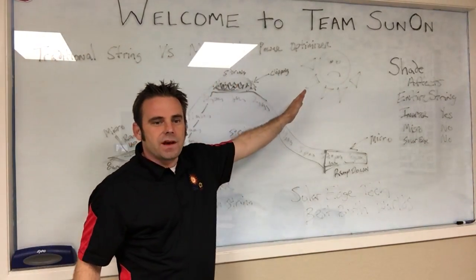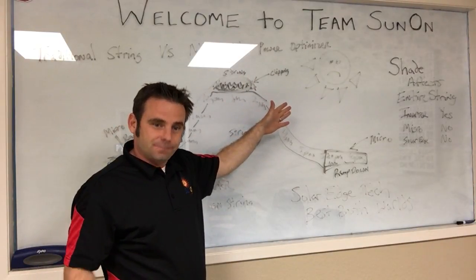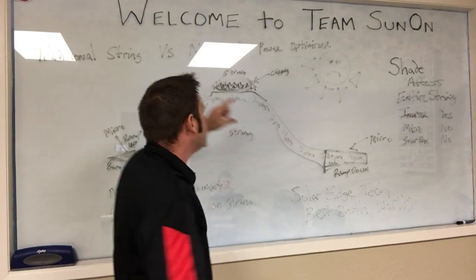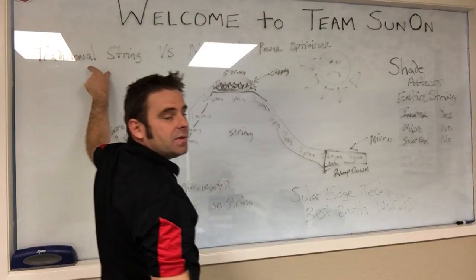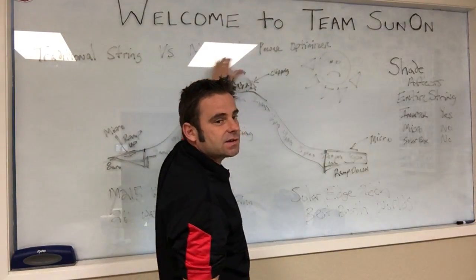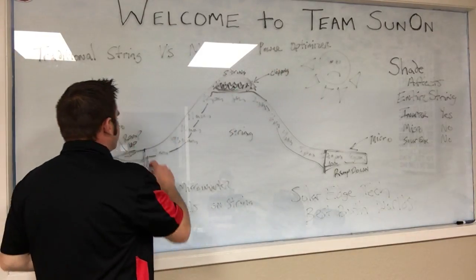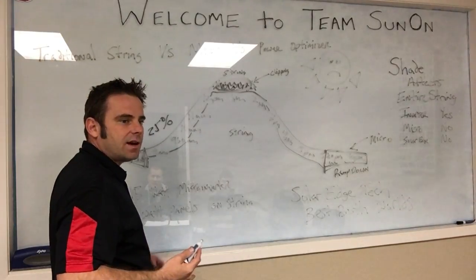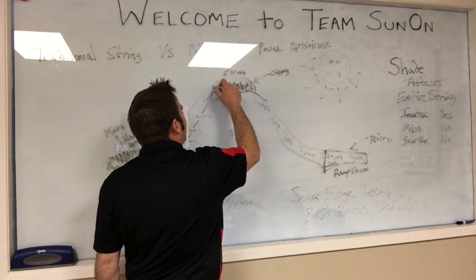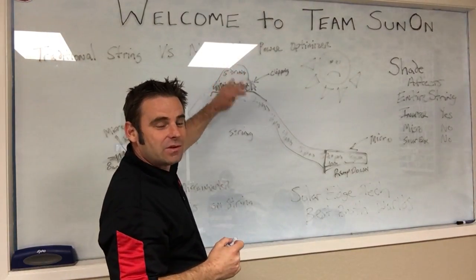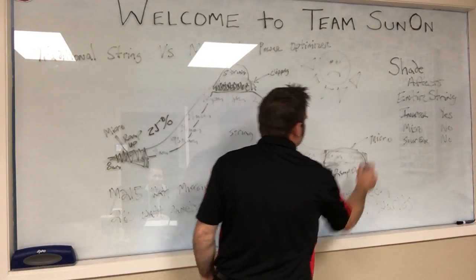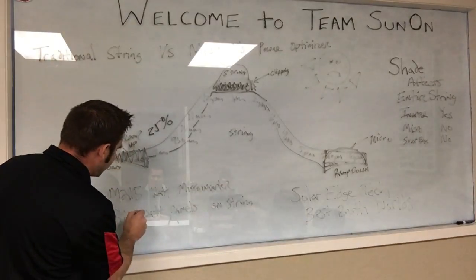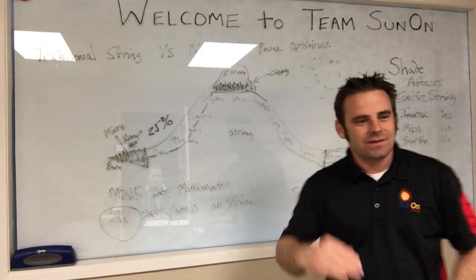Now with the power optimizer - no clipping. The power optimizer takes the best of both worlds: the cost and capabilities of a string inverter keeps your cost down, but it also gives a 25% or more boost - up to 30% more - which gives you more production time. In summer it actually optimizes even more than it would normally clip. So they say the power optimizer works better because it eliminates clipping and maximizes what you can get out of that 260-watt panel.